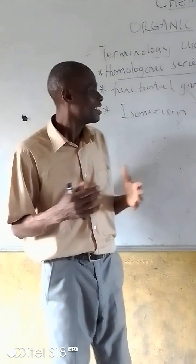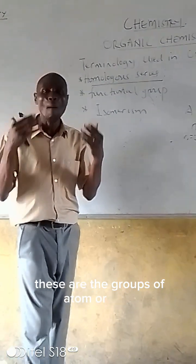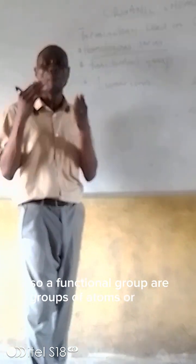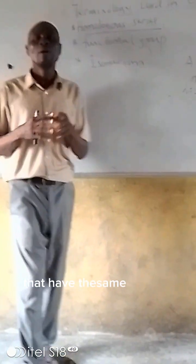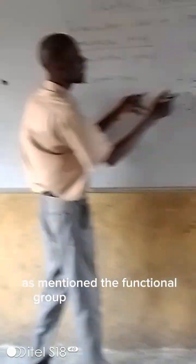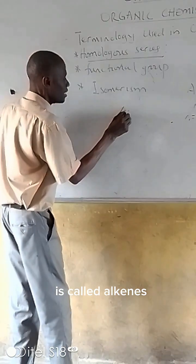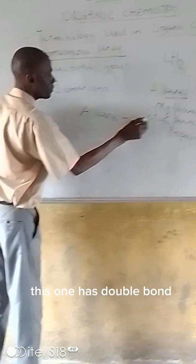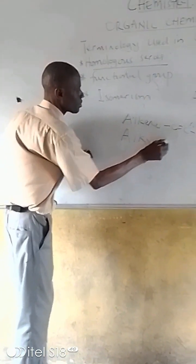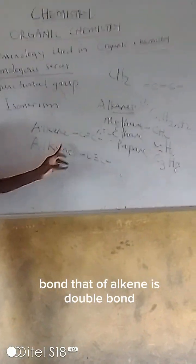Next is called the functional group. What do you call the functional group? Functional groups are the groups of atoms or bonds that have the same chemical properties. For example, the functional group of alkanes is a single bond. Another one is alkenes — their functional group is a double bond. And that of alkynes — this one has a triple bond.